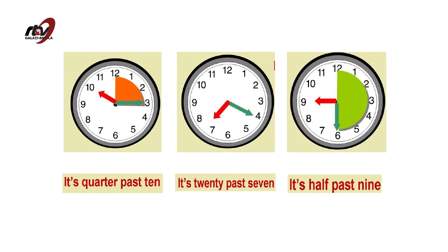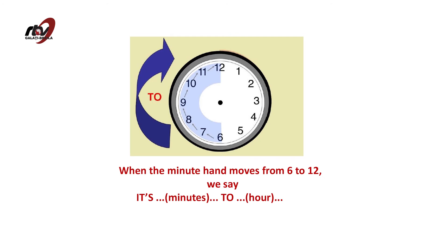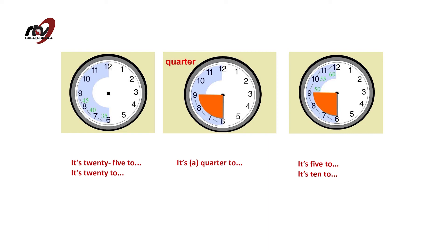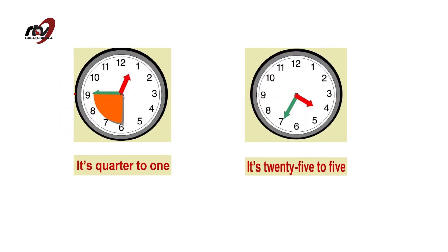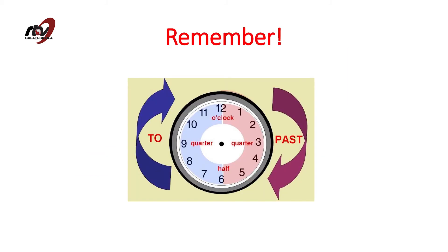Let's see some examples. It's quarter past ten. It's twenty past seven. It's half past nine. When the hand moves from six to twelve, we say it's the number of minutes to the upcoming hour — like twenty-five to, quarter to. Examples: quarter to one, twenty-five to five. Remember: when the hand is at twelve it's o'clock, at three it's quarter past, at six it's half past, and at nine it's quarter to.